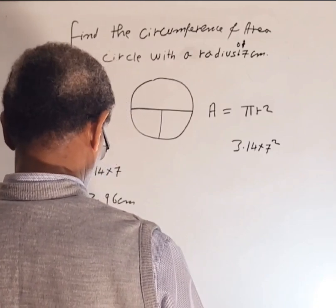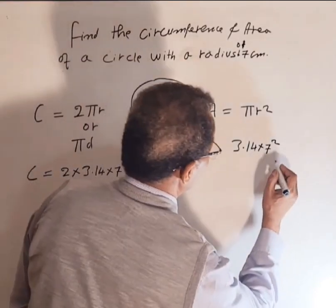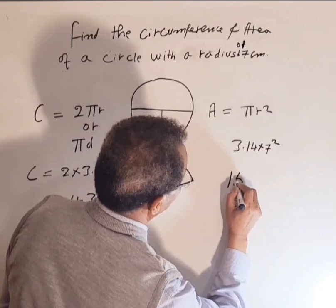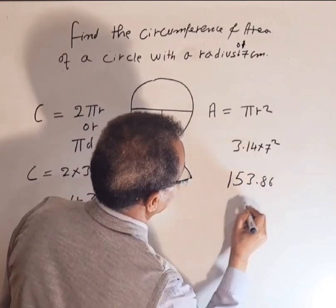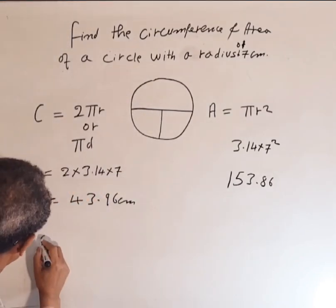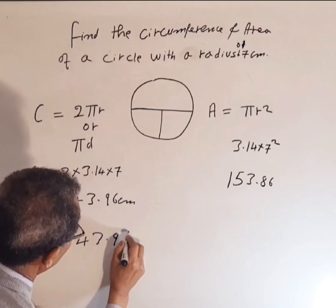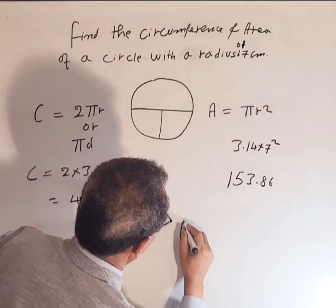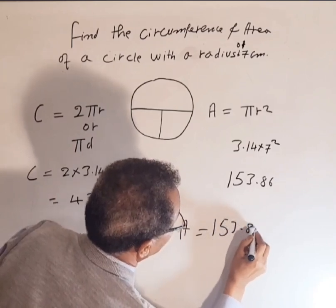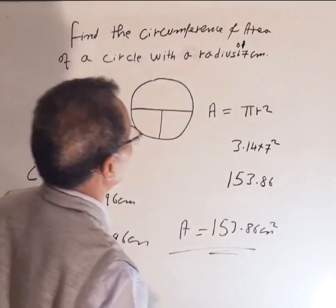153.86. A equals 153.86 square centimeters. So we have circumference 43.96 centimeters and area 153.86 square centimeters. Thank you.